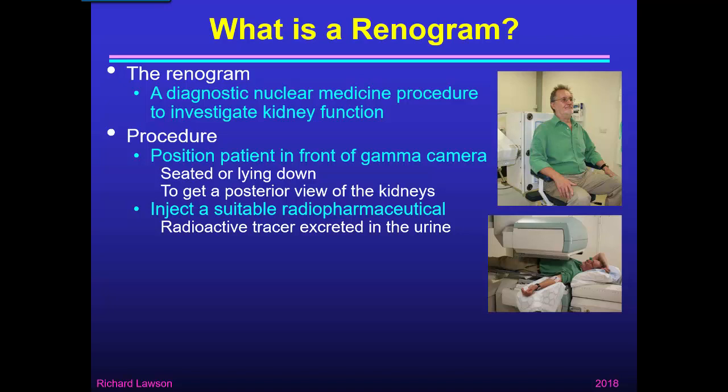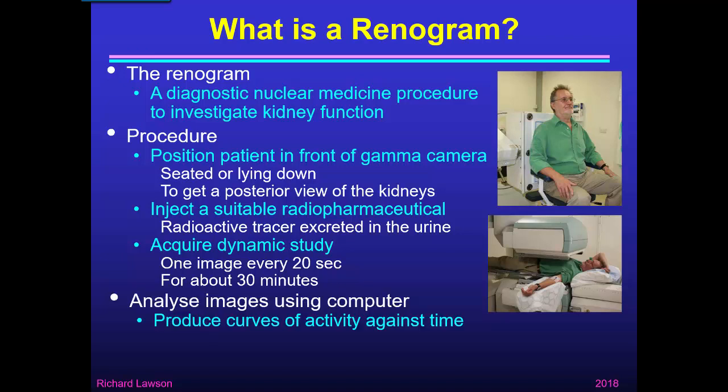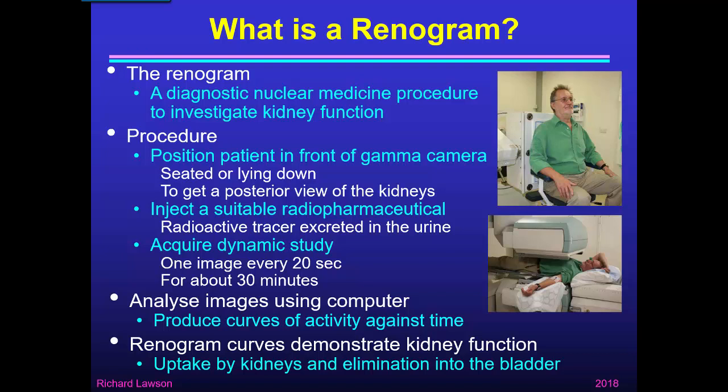We then inject a suitable radiopharmaceutical. A radiopharmaceutical is a chemical with a radioactive label, and for the renogram we use a radioactive tracer that's excreted in the urine, so we can see it passing through the kidneys. Then we acquire a dynamic study, typically one image with the gamma camera every 20 seconds for about 30 minutes. We then analyse the images using a computer to produce curves showing how the radioactivity — the amount of radiopharmaceutical — in each kidney changes with time. Those curves are called the renogram curves, and they demonstrate kidney function, both uptake by the kidneys and elimination into the bladder.